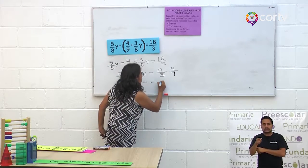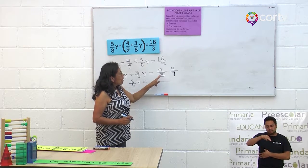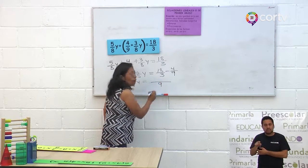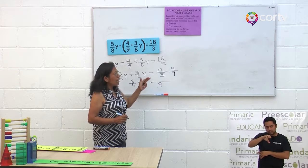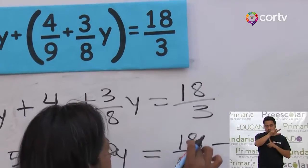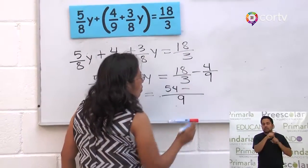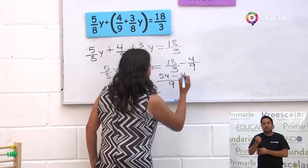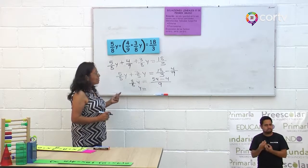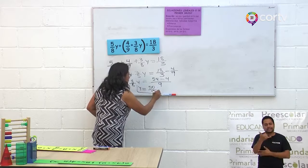Aquí hacemos la resta de fracciones 18 tercios menos cuatro novenos. El nueve es el máximo común divisor porque el nueve divide al tres. Nueve entre tres es tres; dieciocho por tres es cincuenta y cuatro. Nueve entre nueve es uno; uno por cuatro es cuatro. Ocho octavos es uno. Queda Y igual a cincuenta y cuatro menos cuatro sobre nueve, que es cincuenta novenos. Ese es el valor de Y.